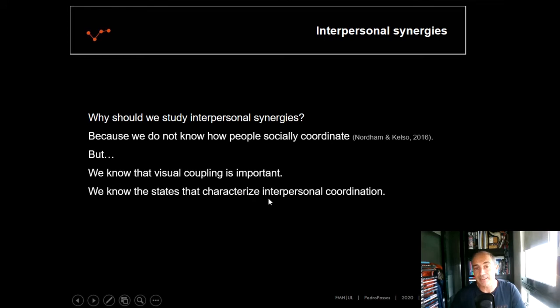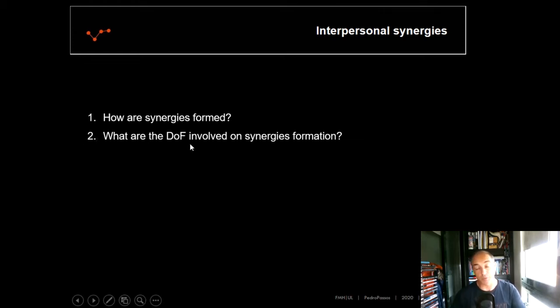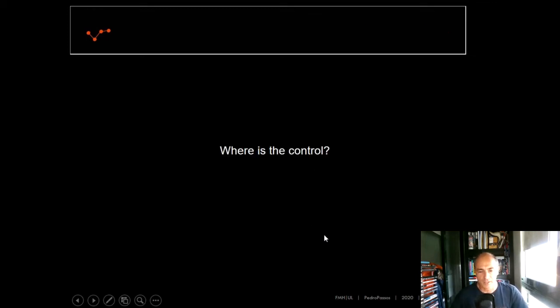We know the states that characterize interpersonal coordination. There is a considerable amount of research that can characterize based on the relative phase analysis in-phase and out-of-phase synchronization states. But now, how are synergies formed? That is one main question that we are struggling to achieve. What are the degrees of freedom, the possibilities of action involved in those synergies formation? And what are the implications for sports performance? Are synergies good or are synergies bad? We do not know.